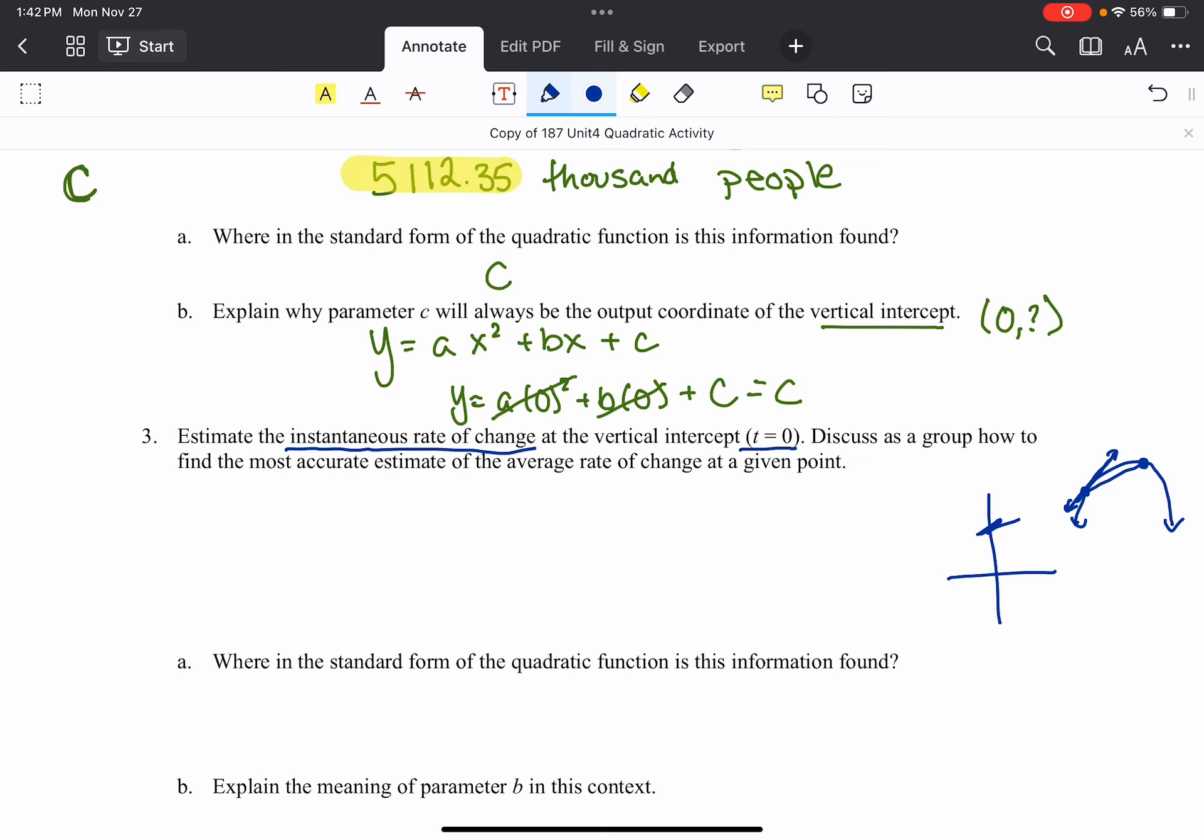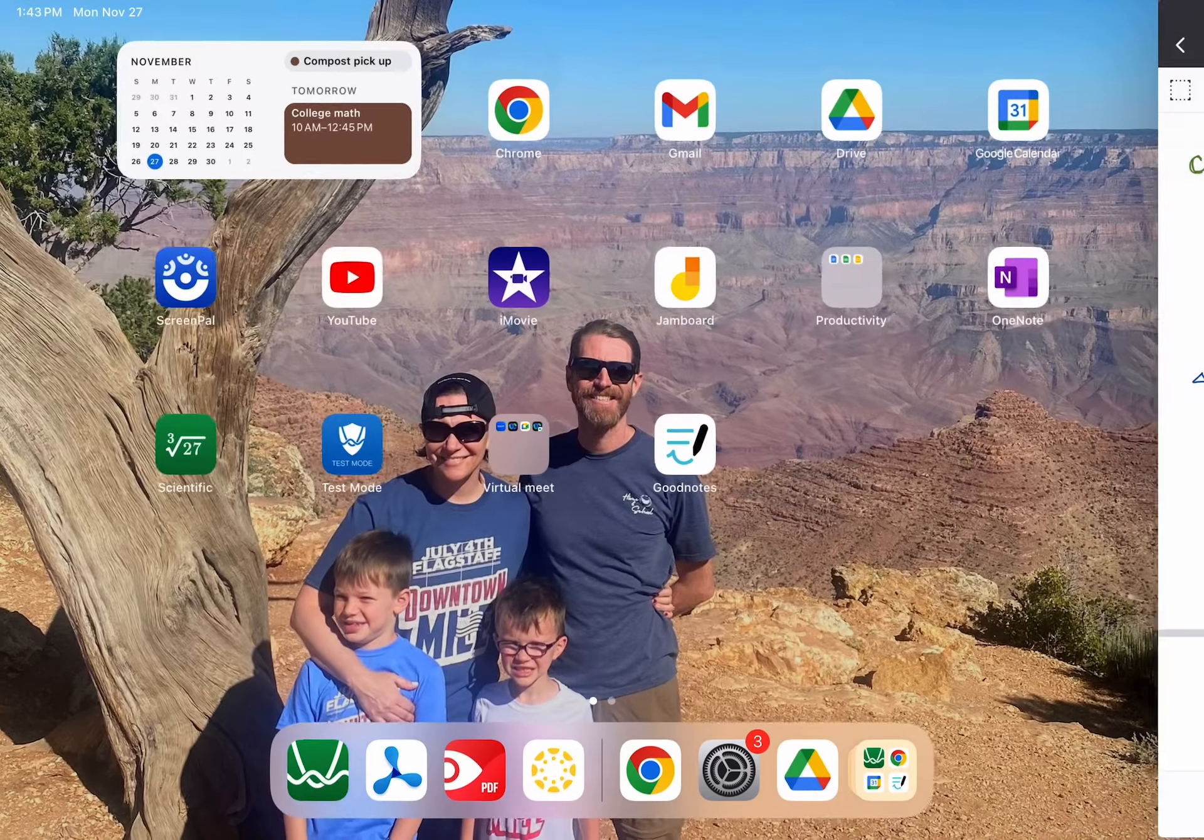And so to do that, basically our slope, our rate of change would be the change in P over change in t, change in time. But we're going to want to make that change in time really, really small. And the smaller we can get, the smaller that interval is going to be, the closer we're going to get to the instantaneous rate of change. Now in the end it's going to be an estimate. But we can shrink that interval down as close as we can to get an accurate estimate.